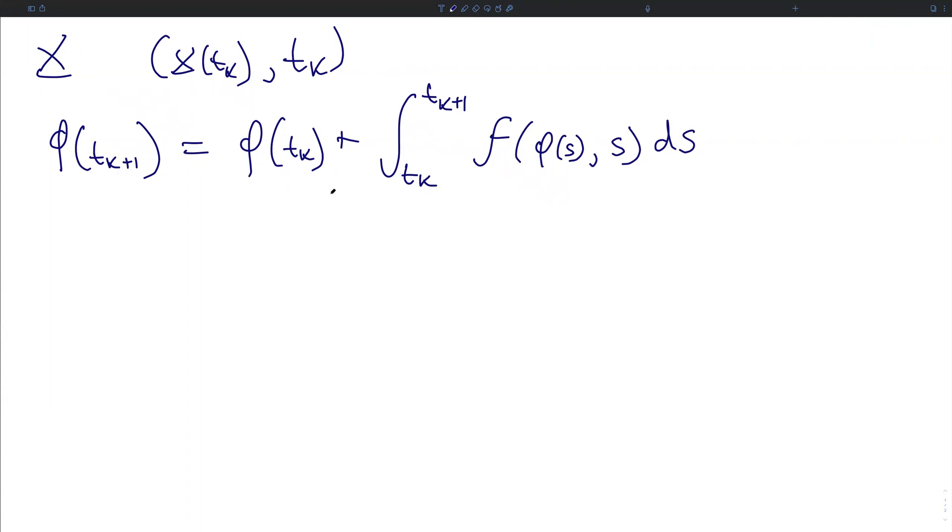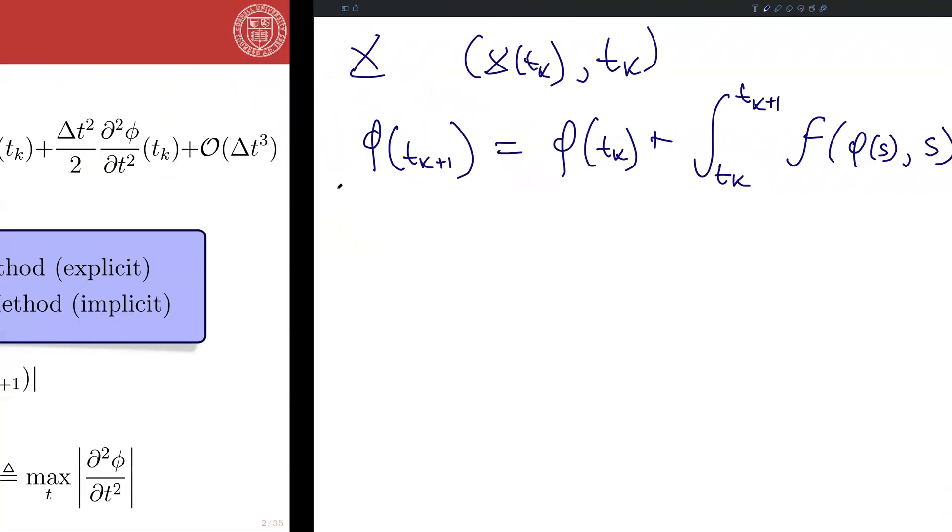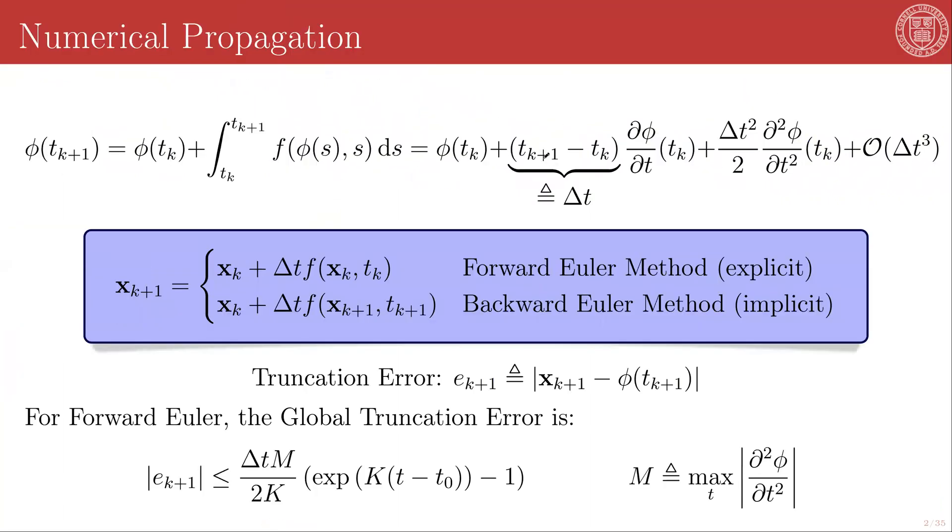From this, we write our expansion in a Taylor series as usual, and it takes this form. So φ evaluated at the next time point tₖ₊₁ looks like φ at tₖ plus the difference between tₖ₊₁ and tₖ, which we will call Δt, times the first partial in φ in time evaluated at the previous time point tₖ, plus Δt²/2 times the second derivative of φ in t at tₖ, plus higher order terms of order Δt³ and onwards.